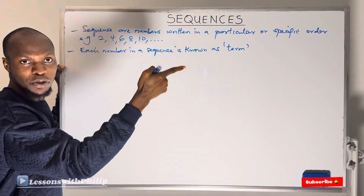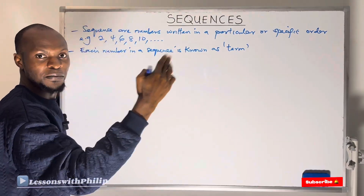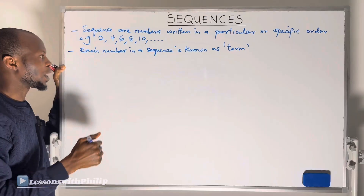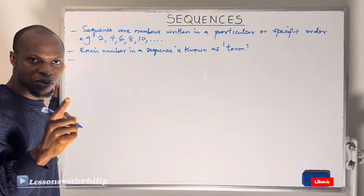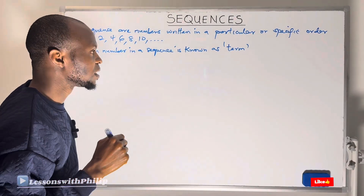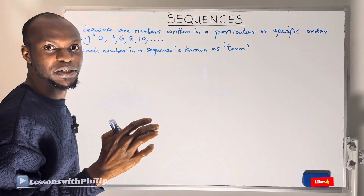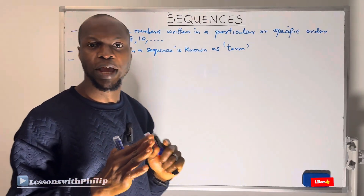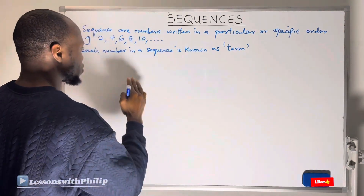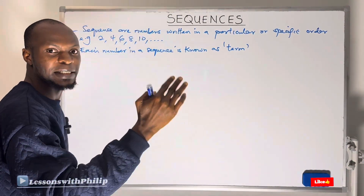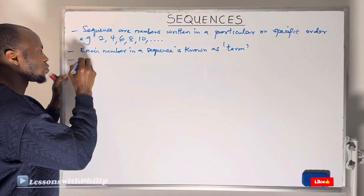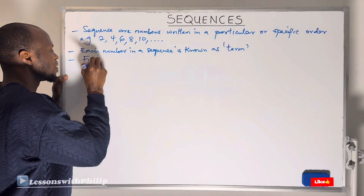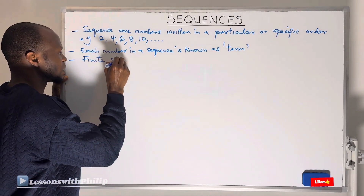6 will be the third term, 8 will be the fourth term, and so on. Another thing to take note is that some sequences end while some do not. When a sequence has a terminal end, such a sequence is known as a finite sequence.